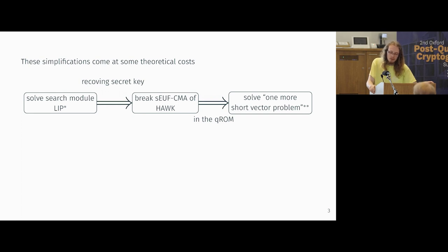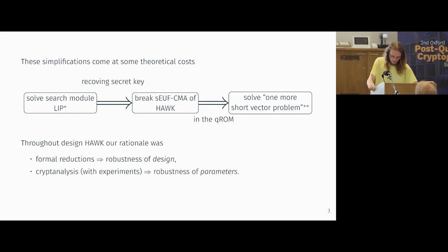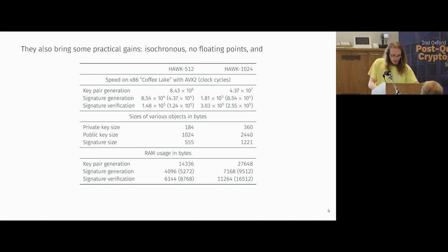And these asterisks are here because our simplifications mean that this doesn't really fit into the framework of Duca and Van Verde. In particular, this one-more-short-vector problem is introduced in HAWC so that we have a concrete target for cryptanalysis. It's something that's not been seen before. But kind of throughout our designing of HAWC, we took the rationale that these formal reductions tell us our design is sane, but we unapologetically set our parameters via experimental cryptanalysis.